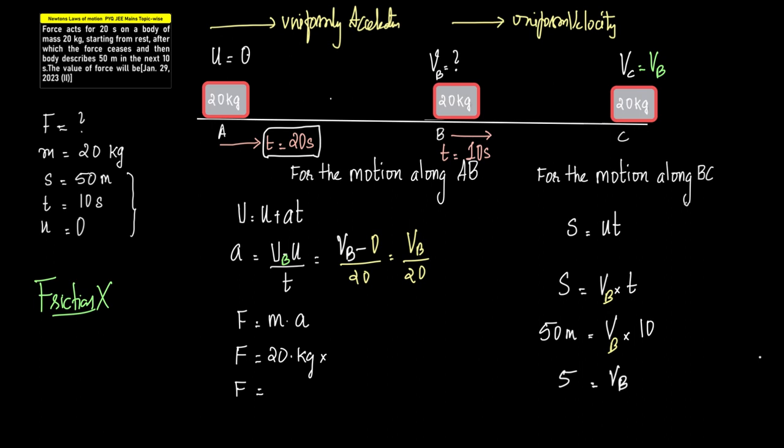And if 5 is equal to vb, F is equal to ma. This will become mass is 20 kilogram, so 20 kilogram into acceleration, which is vb upon 20. Let me write one more time: acceleration is vb upon 20. So this is further equal to 20 by 20 is 1, so this is equal to the value of vb, which is 5. Therefore the value of force is 5 newtons.